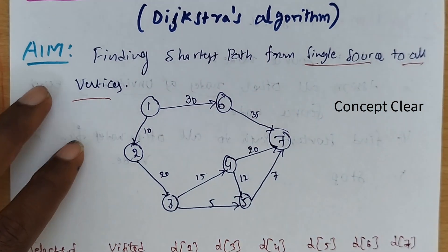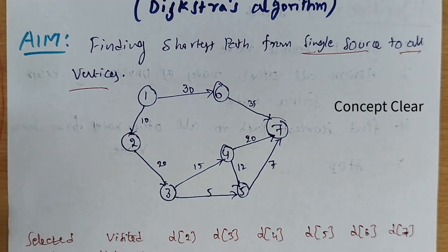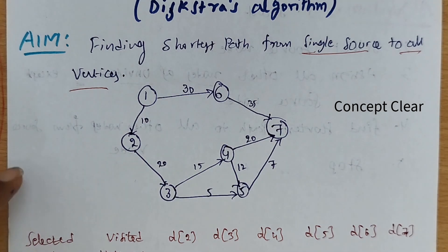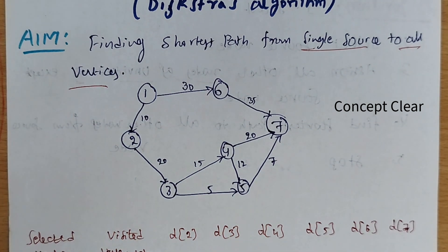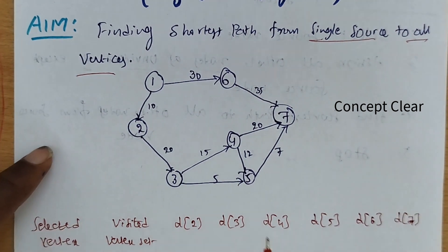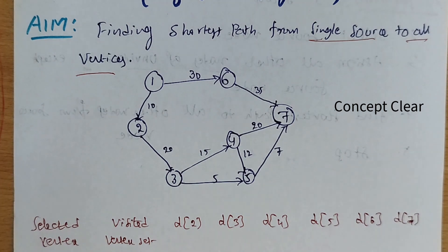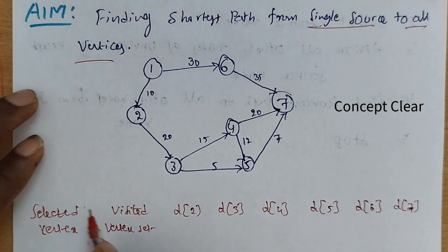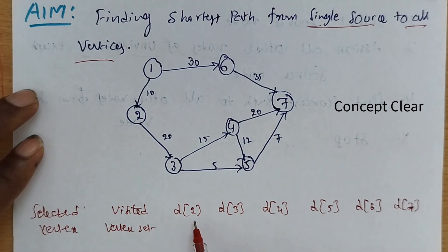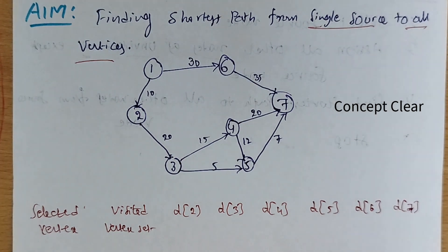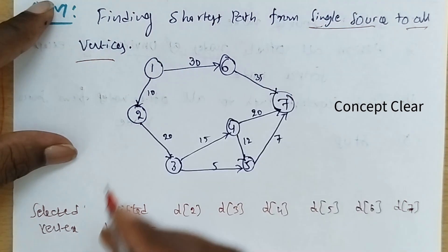If a weighted graph is given, we have to find out the shortest path from the starting vertex to all vertices. We need to select one source node and find the path — maybe a direct path or indirect path. According to the graph, I am taking a table with selected vertex, visited vertex, d(2), d(3), d(4), d(5), d(6), and d(7).